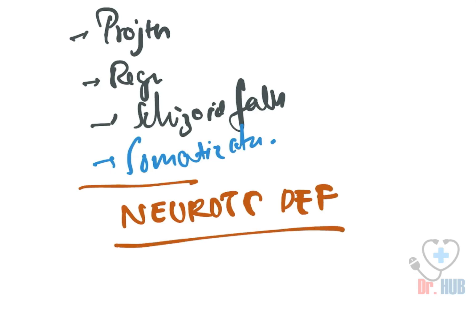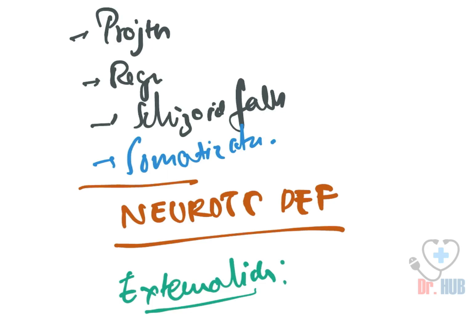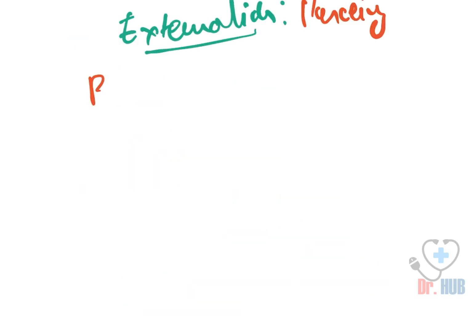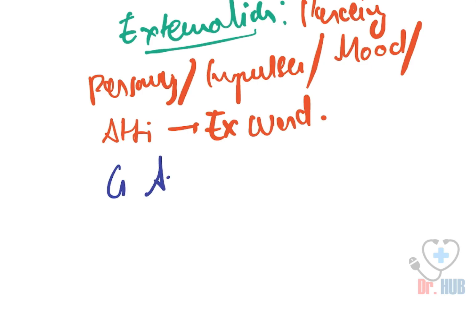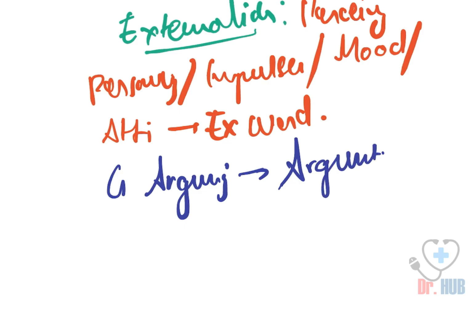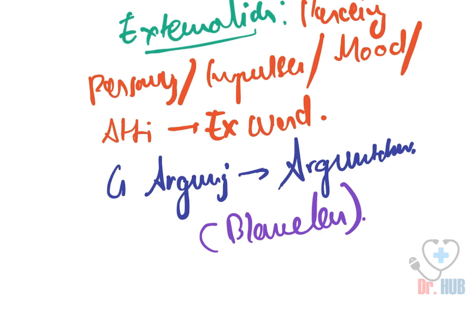Under neurotic defenses, the first is externalization. Externalization is perceiving one's own personality, impulses, mood, and attitude in the external world. An example is an argumentative person who perceives the doctor as argumentative, while believing himself to be blameless. This is externalization.